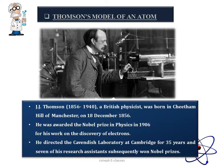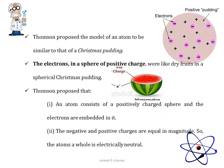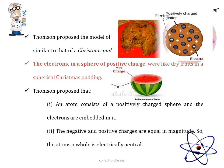Thomson's model of an atom. Sir Joseph John Thomson was a British physicist born in Manchester on 18 December 1856. He was awarded the Nobel Prize in Physics in 1906 for his work on the discovery of electrons. He directed the Cavendish Laboratory at Cambridge for 35 years and seven of his research assistants subsequently won Nobel Prizes. Thomson proposed a model of an atom to be similar to that of a Christmas pudding. That's why this model is also termed the plum pudding model. According to him, the electrons in a sphere of positive charge were like dry fruits in a spherical Christmas pudding. Just like how the dry fruits are present in a spherical Christmas cake, the electrons are just like that. They are embedded in this positive sphere.